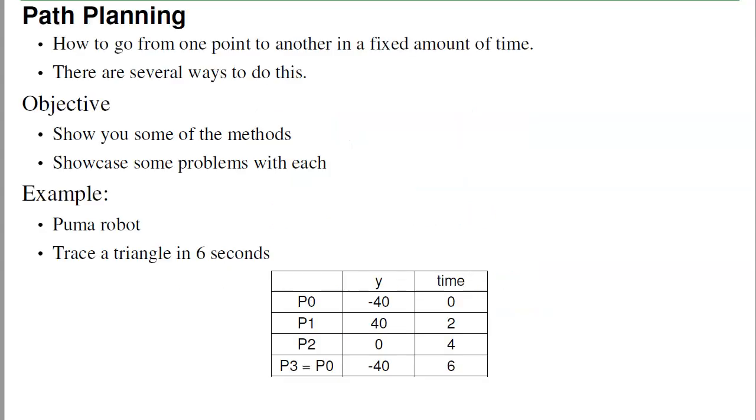So where we're at is I can specify the tip position of the robot, I can specify the joint angles using inverse kinematics, and with that I can trace out different shapes. Path planning deals with how to go from point A to point B in a finite amount of time, and there's a whole bunch of different ways to do that.